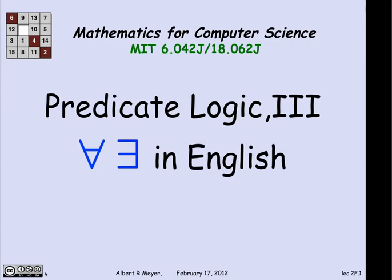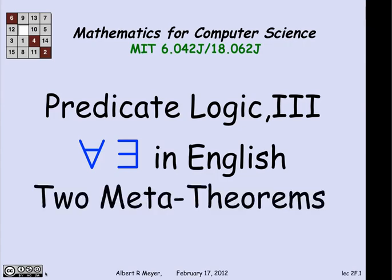The second topic is an optional one, to make some comments about the amazing results in metamathematics — the mathematics of mathematics, or more precisely, the mathematics of mathematical logic — and two fundamental theorems about properties of predicate calculus, which go beyond this class and are optional. I would suggest it's worth listening to the AE in English example, and if you want to skip the short discussion of the meta theorems, that's fine, because it's never going to come up again in this class.